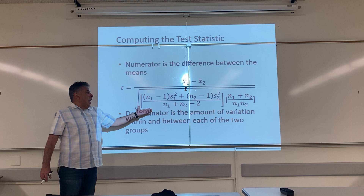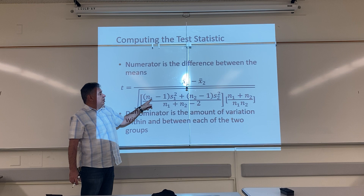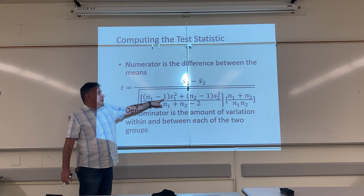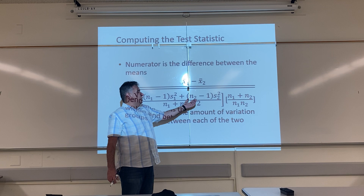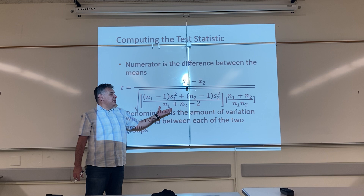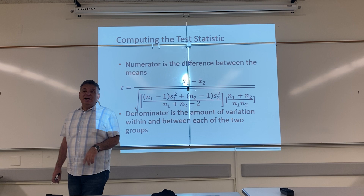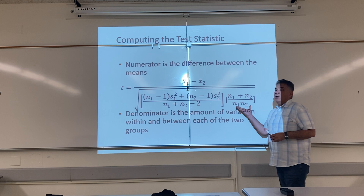Let's take a look at the denominator. The denominator tells us the amount of variation within and between each of the two groups. We're going to take the number of people in the first group, n1 — that's our sample size for the first group — minus one, times the variance of the first group, plus the number of people in group two minus one, times the variance of the second group. All of that is divided by the total sample size — the number of people in group one plus the number of people in group two — minus two, because we have two groups.